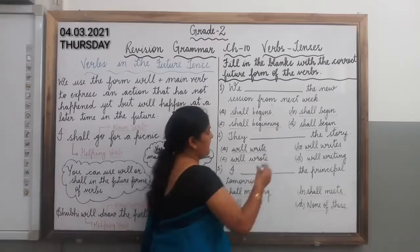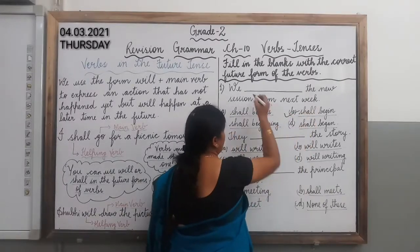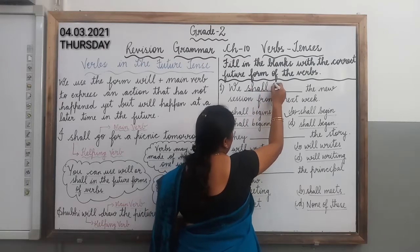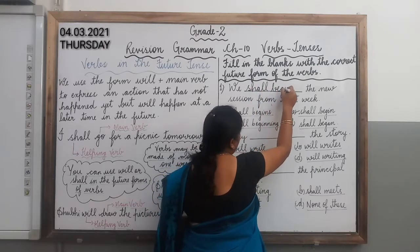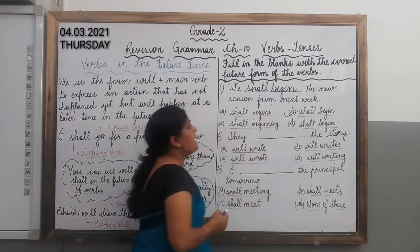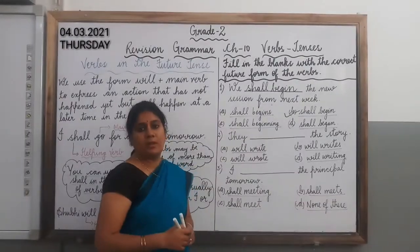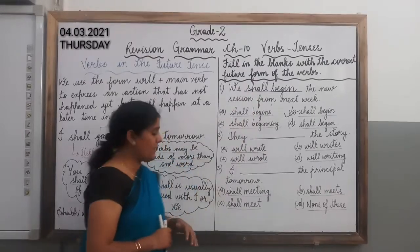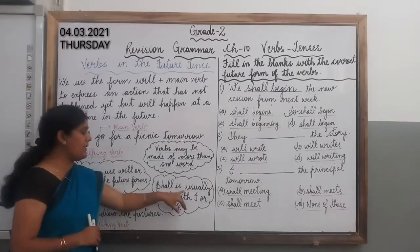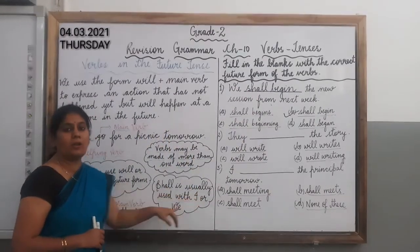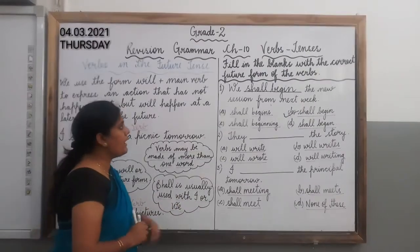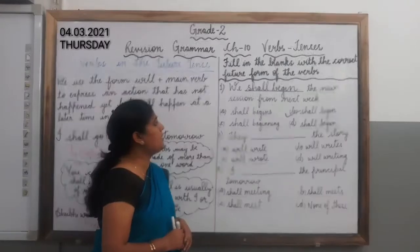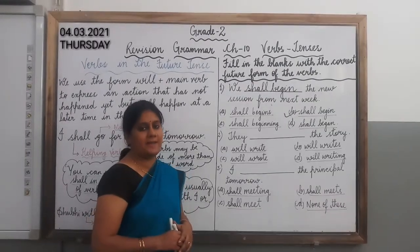Option B, 'shall begin', is the correct answer. Here you can observe that we are talking about the pronoun 'we', so we will use 'shall'. As we have already learned, 'shall' is usually used with 'I' or 'we'. So the complete sentence is: 'We shall begin the new session from next week.'